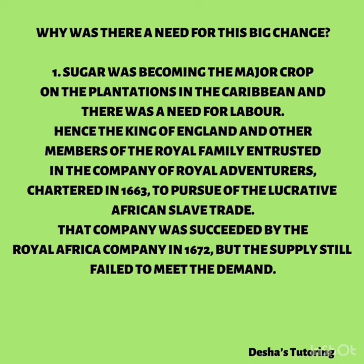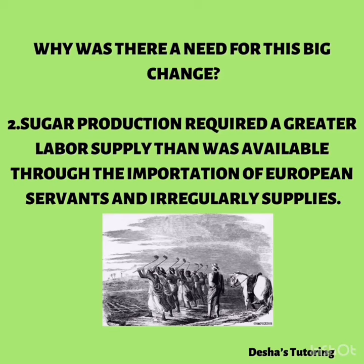But why was there a need for this big change or revolution? Well, sugar was becoming the major crop on the plantations in the Caribbean and there was a need for labor. Hence, the king and other members of his hierarchy entrusted the Company of Royal Adventurers, chartered in the 1600s, to pursue the lucrative African slave trade. That company was succeeded by the Royal African Company in the 1600s, but the supply still failed to meet the demands. In addition, to facilitate the production of this booming crop, sugar cane, much more labor was needed than what was available in the Caribbean — in particular, West African slaves.